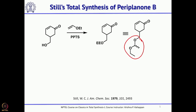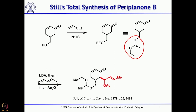Normally primary alcohols are protected as TBDPS or TMS ethers, and in older times as THP ether. This synthesis was prior to the TBDPS ether era. Then the anion was generated and quenched with an aldehyde, which was trapped with acetic anhydride to get the corresponding acetate.